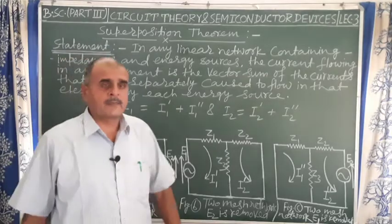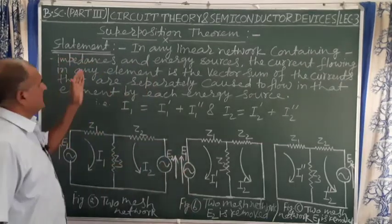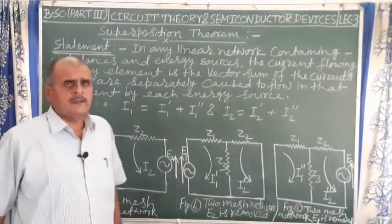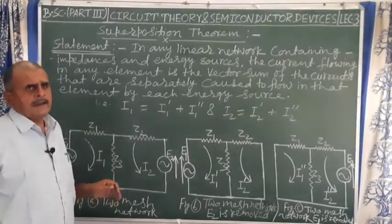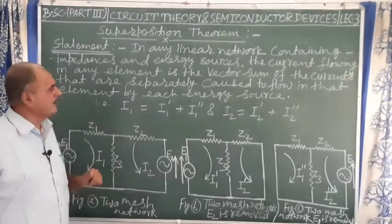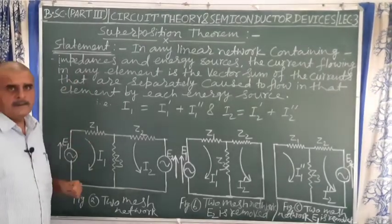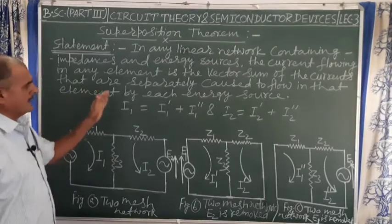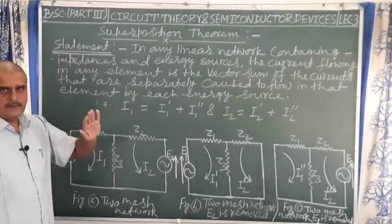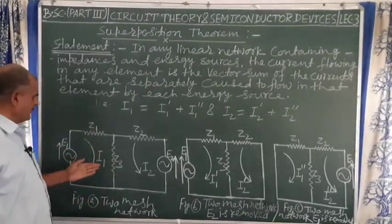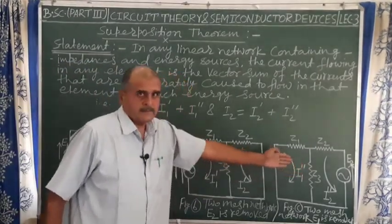First of all we have to discuss the statement of the Superposition Theorem. This theorem states that in any linear network containing impedances and energy sources, the current flowing in any element is the vector sum of the currents that are separately caused to flow in that element by each energy source. That is, i1 equals i1-dash plus i1-double-dash.